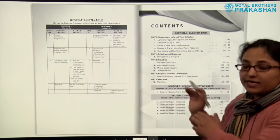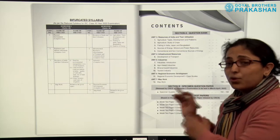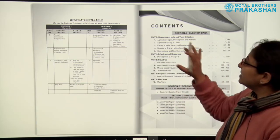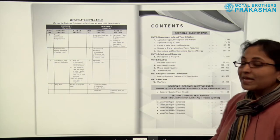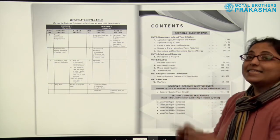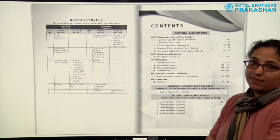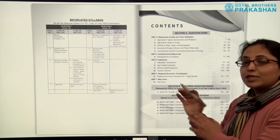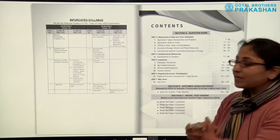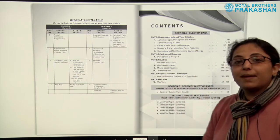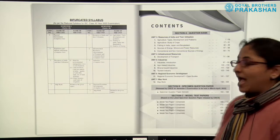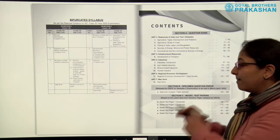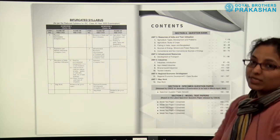After that, we come to the contents section. This section is divided into three different parts. Section A is the question bank. Section B is the Specimen Question Paper, and Section C is the Model Test Papers. Section A has all the units and question banks which are solved. After that we have the Specimen Question Paper released by CISCE. And lastly, we have the Model Test Papers, which are unsolved but strictly based on the Specimen Question Paper.